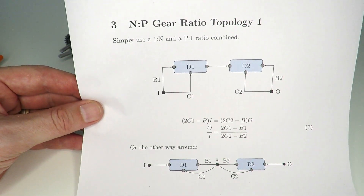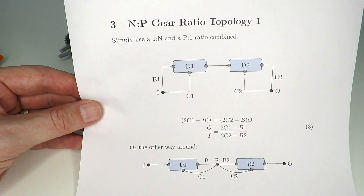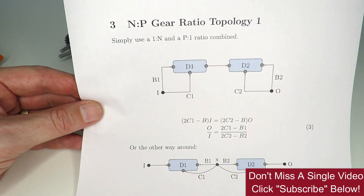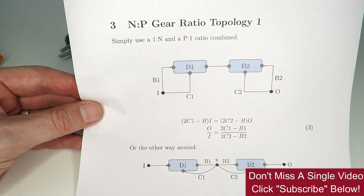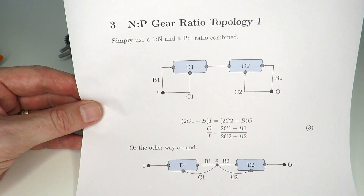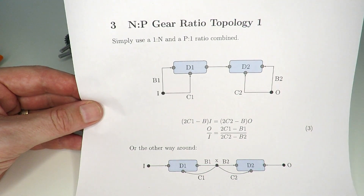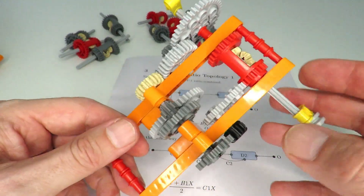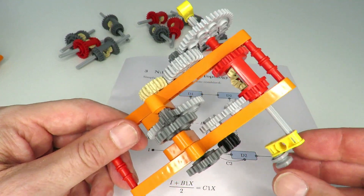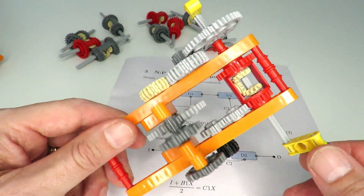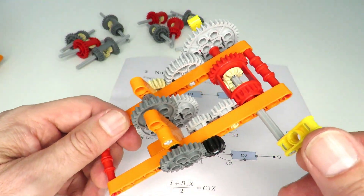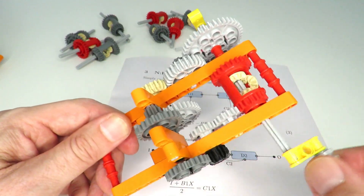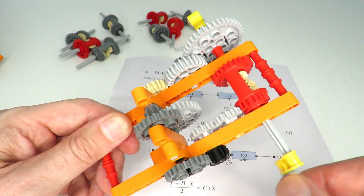The problem is that because n and p might be quite large — like 421 to 313 — trying to turn a 421 gear ratio in reverse is in practice almost impossible. For example, this is the 421-to-1 differential I presented last week, and it turns fine in one direction.